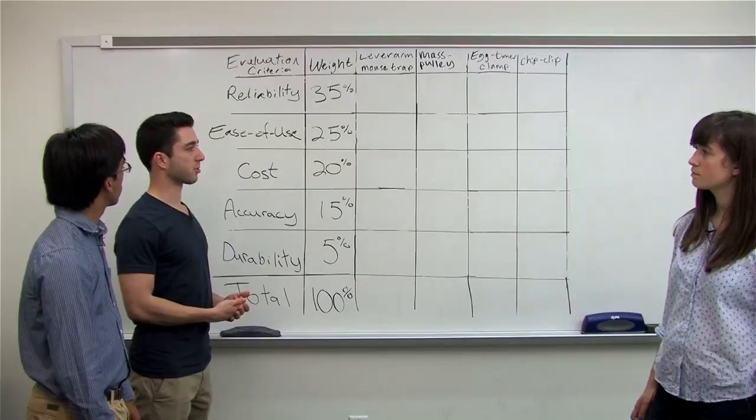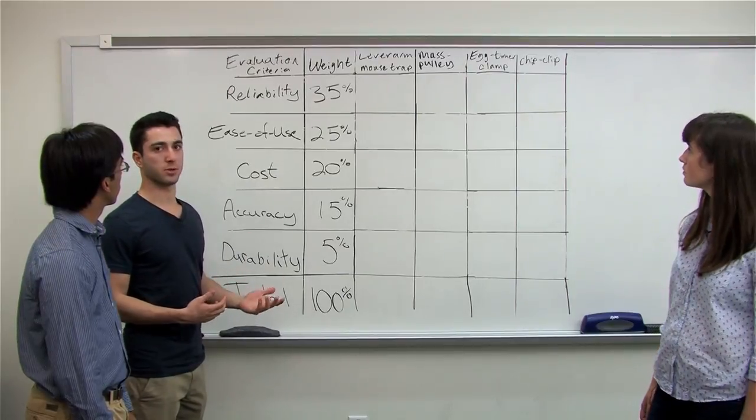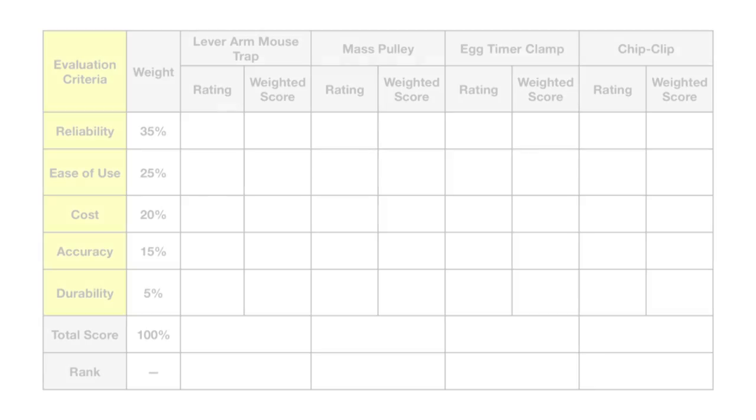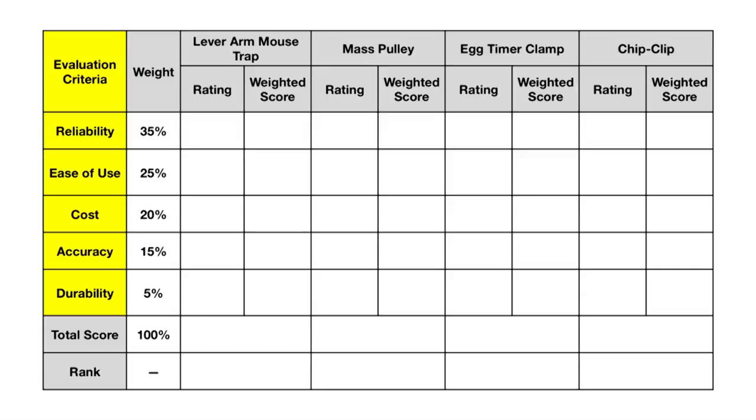Okay, now that we've already performed the screening matrix, we can move on to the scoring matrix. As you can see, the criteria are again listed on the left-hand side of the table, and our solutions that we've chosen to move forward with are listed on the top.